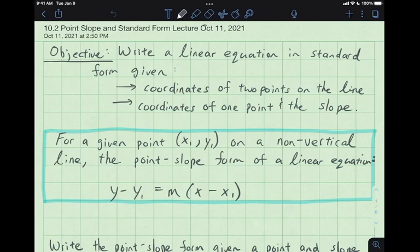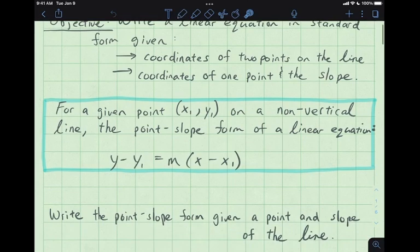This is for section 10-2 about point-slope and standard form. So from our notes, this is the new equation we've learned for the equation of the line. m here is our slope, y1 and x1 are the y and x coordinates of our given point. Together these make the equation of a line.